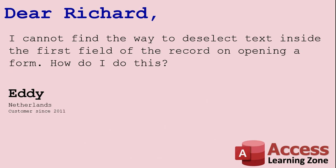Eddie from the Netherlands writes: I cannot find a way to deselect text inside the first field of the record on opening a form. How do I do this? Well, Eddie, there is a way to actually deselect that text, but I'm assuming you want to do this because you're worried someone's going to open a form and hit a key and change that text. So let me show you a couple of better ways that you can get around this problem without having to worry about actually deselecting the text. With creative use of your tab order, your tab stop, and your cycle properties, you could probably make your problem go away.